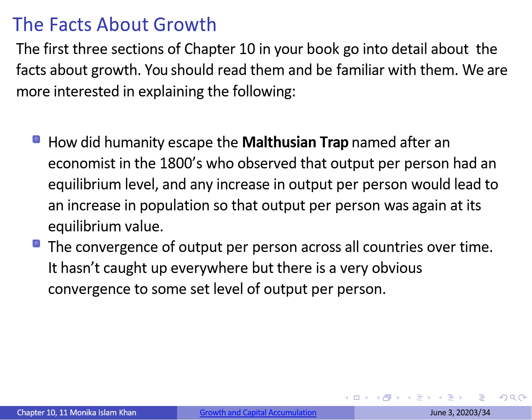A second interesting aspect of growth theory is the convergence of output per person across all countries over time. Convergence in growth theory argues that as countries develop and growth rates increase, both rich and poor countries tend to converge in terms of output per person. The simple idea is that poor countries will grow faster than richer countries and eventually catch up to them, though convergence hasn't been universal.